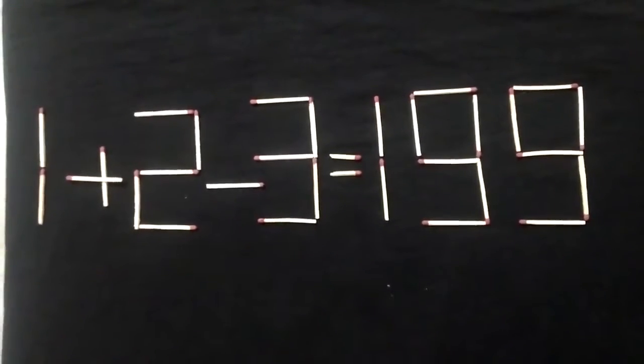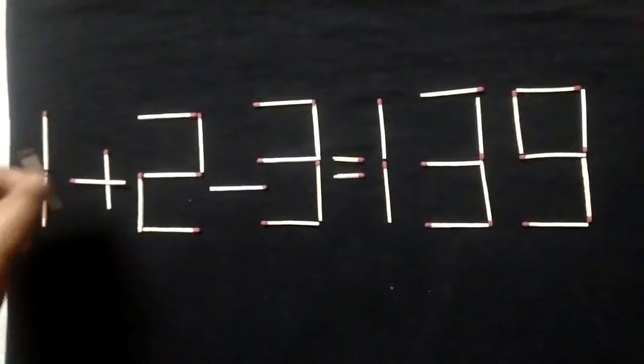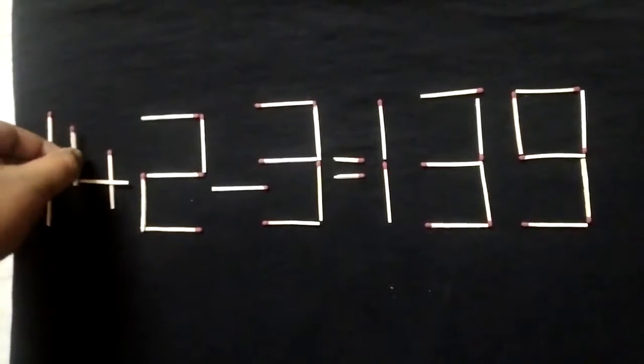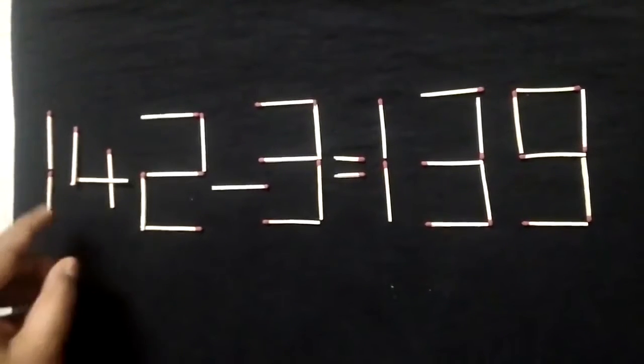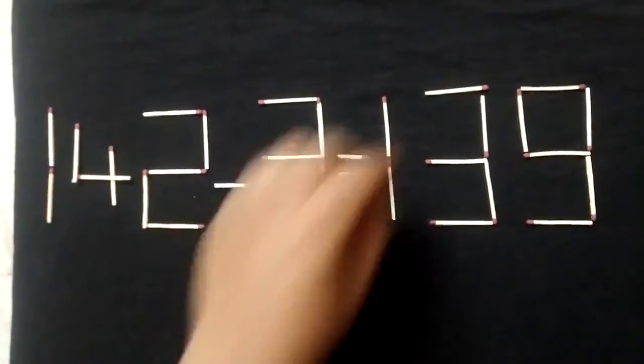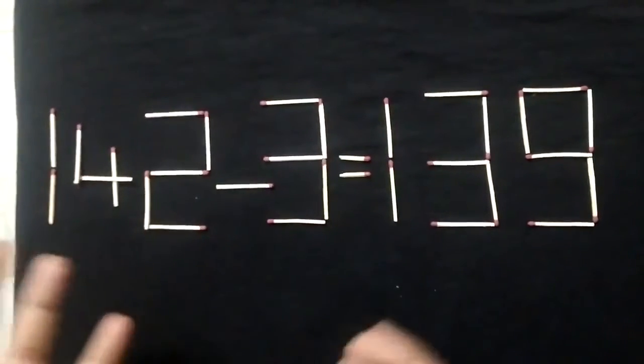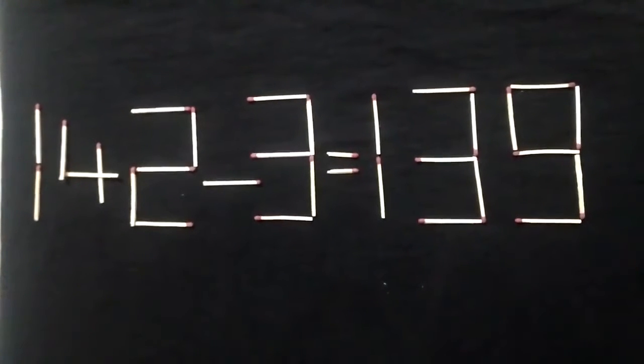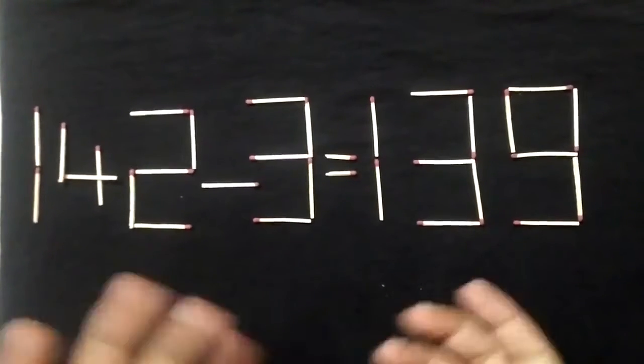Just pick up this stick and put it here, and what it becomes? It becomes a figure of 4. Now 142 minus 3 becomes 139. The simple solution of a simple puzzle. It appears to be tough, but it was quite simple.